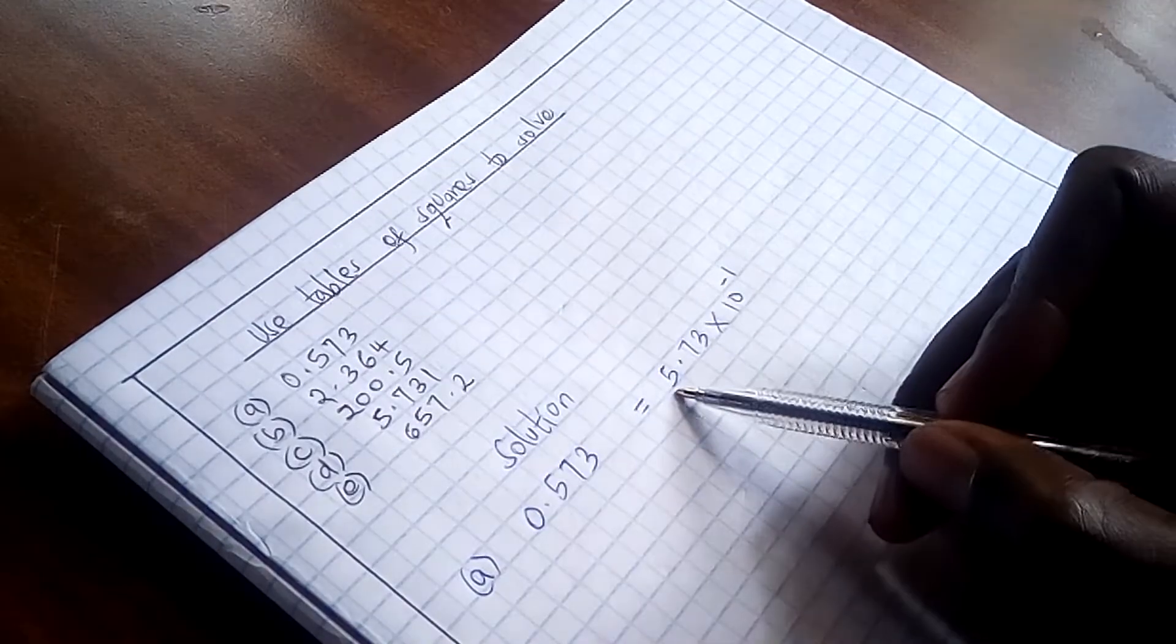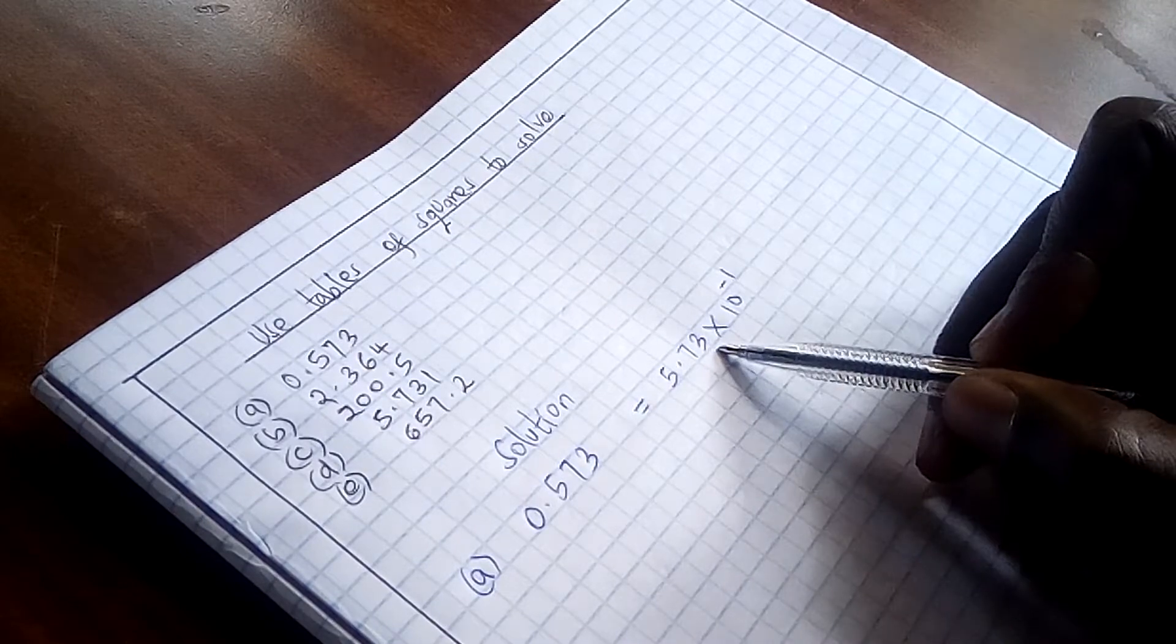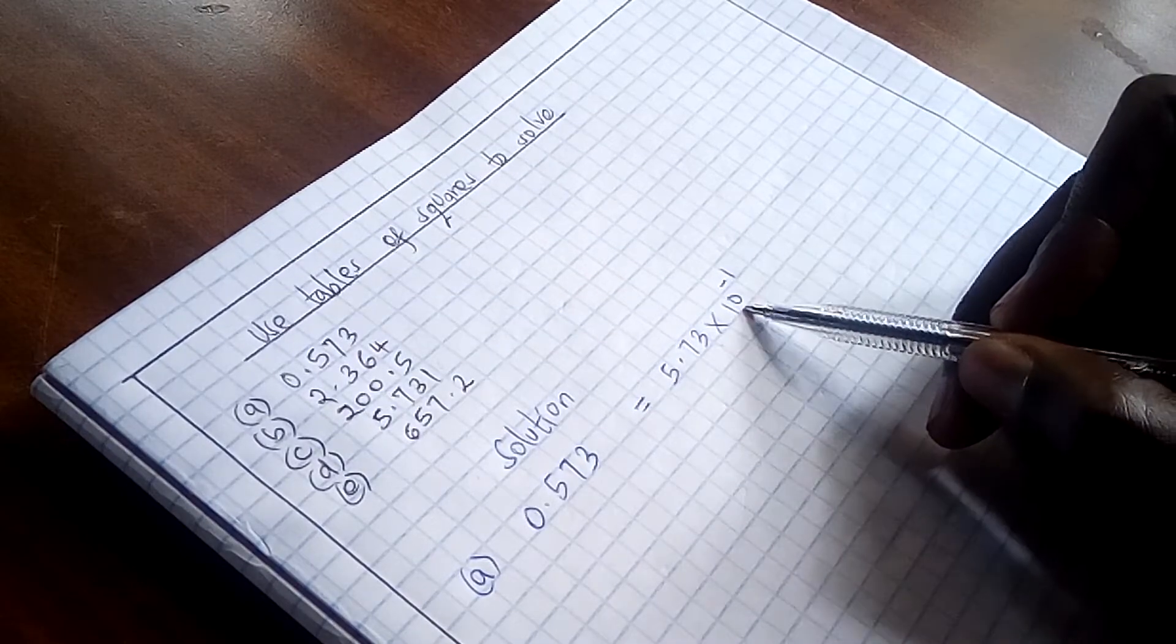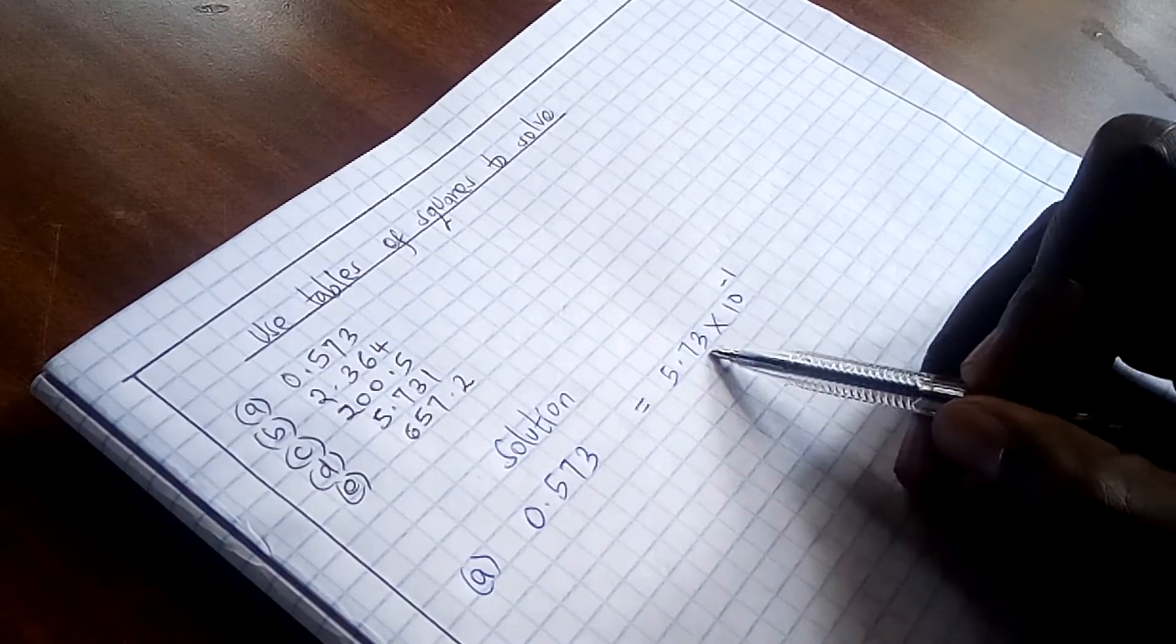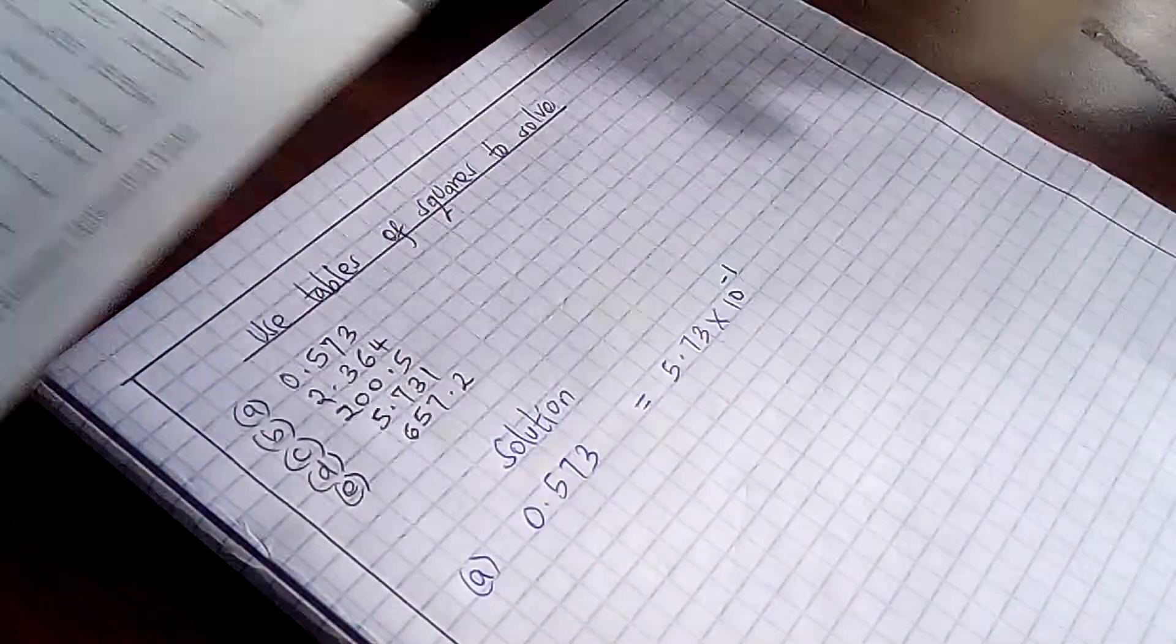Therefore, we are going to look at the square of this number, then multiply that by the square of this number here. The square of this number we are going to get from our table. And what is the square of 5.73?